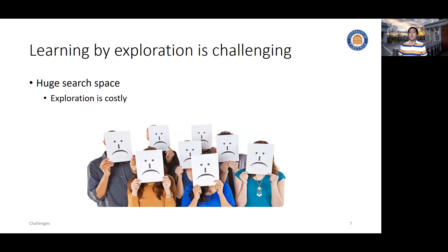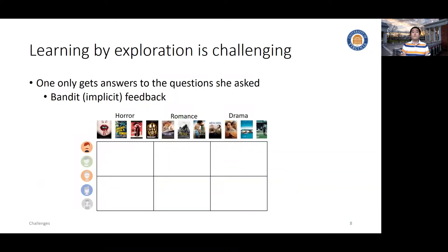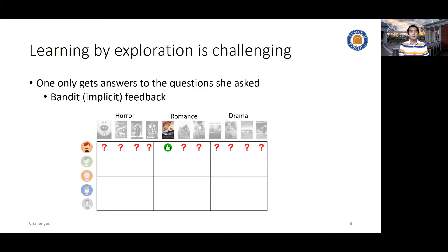You don't want to do bad recommendations, but you still need to learn what you don't know. And because of this costly exploration, we often face so-called bandit feedback — we only get the answer to the questions we have asked. For all the other things we didn't ask, we still don't know the user's preferences. For example, if we only ask the user whether they like the movie Titanic, no matter whether the answer is positive or negative, we know little about the others. We have to keep asking questions to learn more. So the efficiency of exploration is very important.